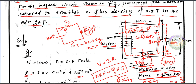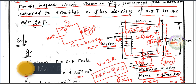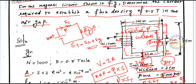After calculation, the exciting current is approximately 4 amperes. This is the basic formula and approach. Please understand this basic magnetic circuit problem and the important formulas used. For any doubts, please comment in the comment box. Thank you very much.